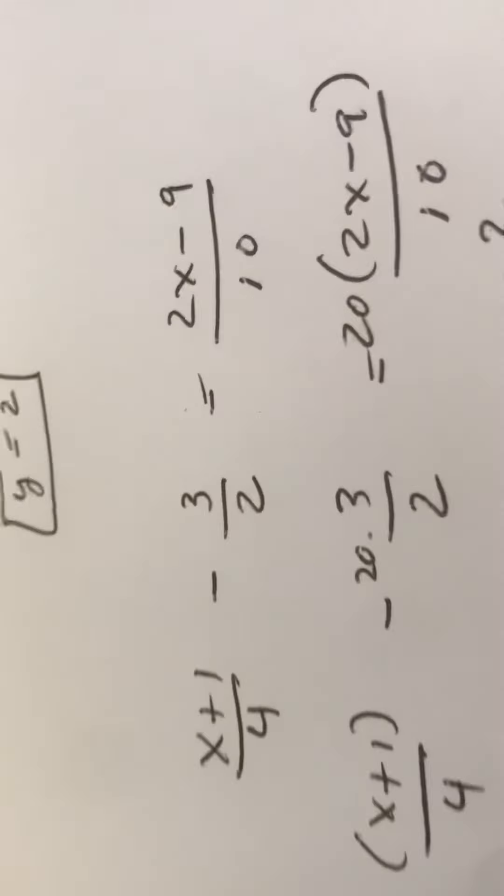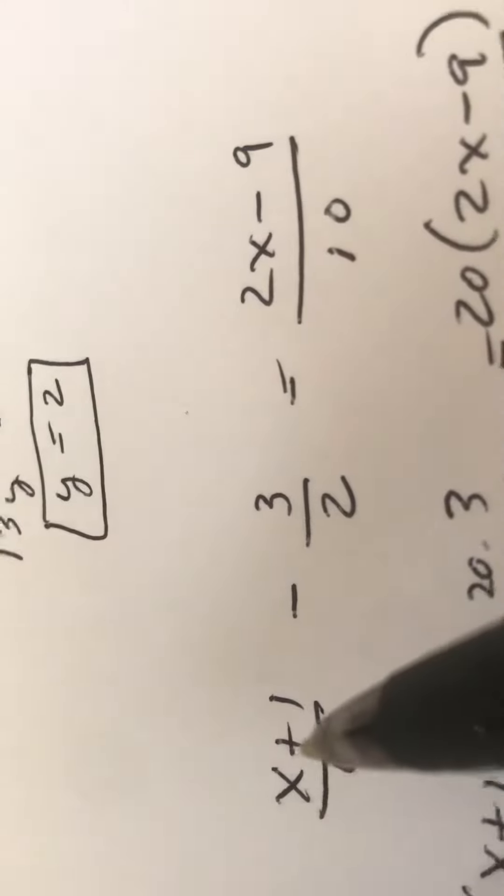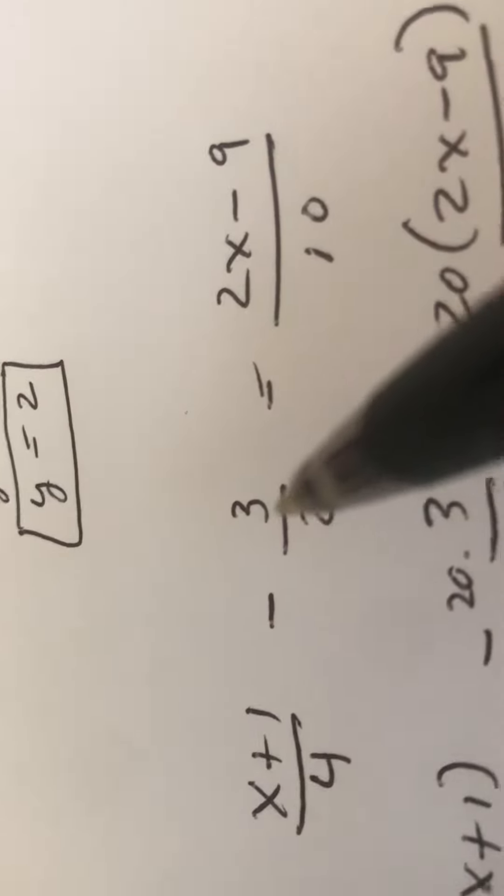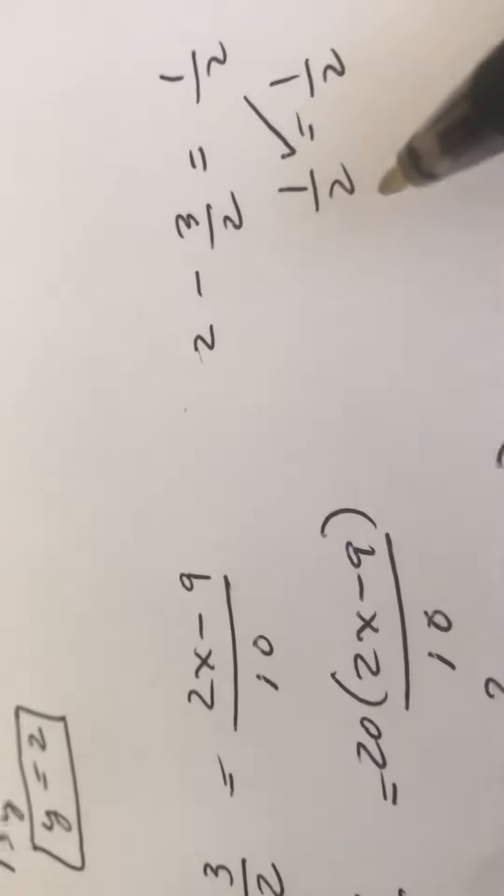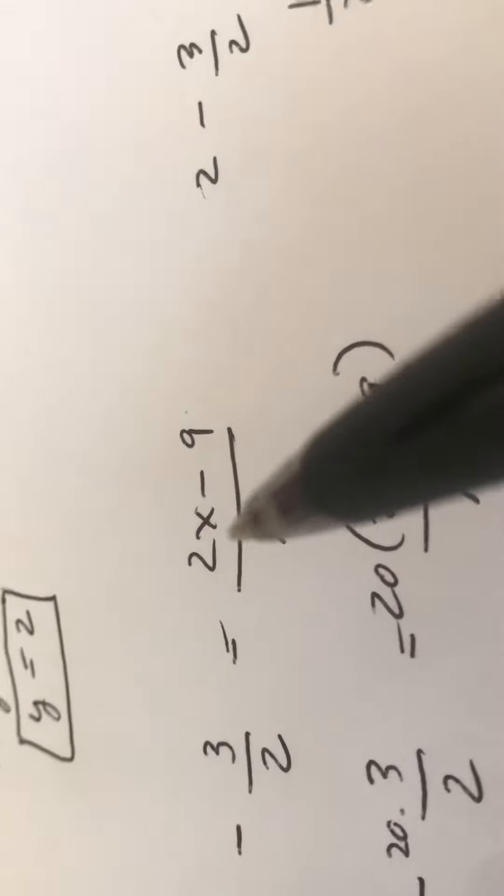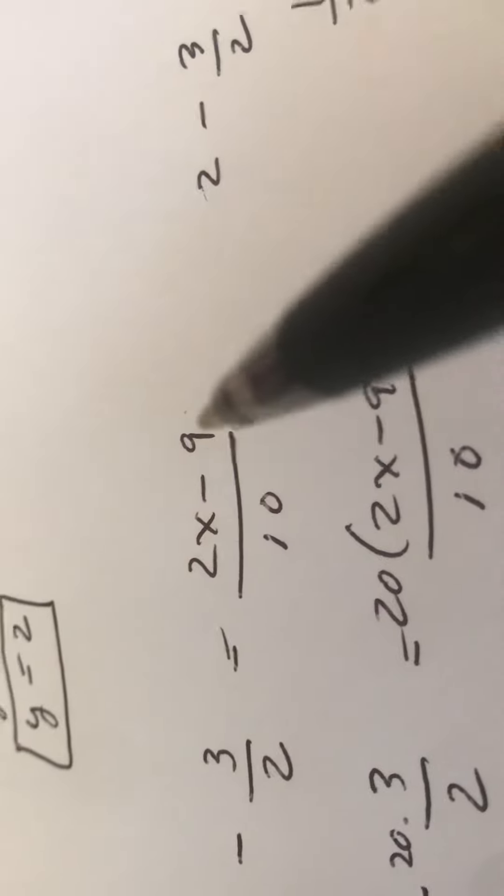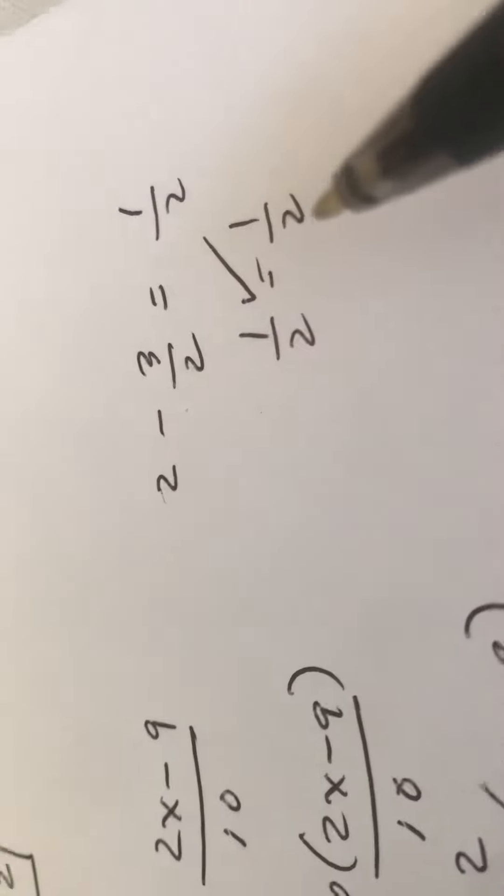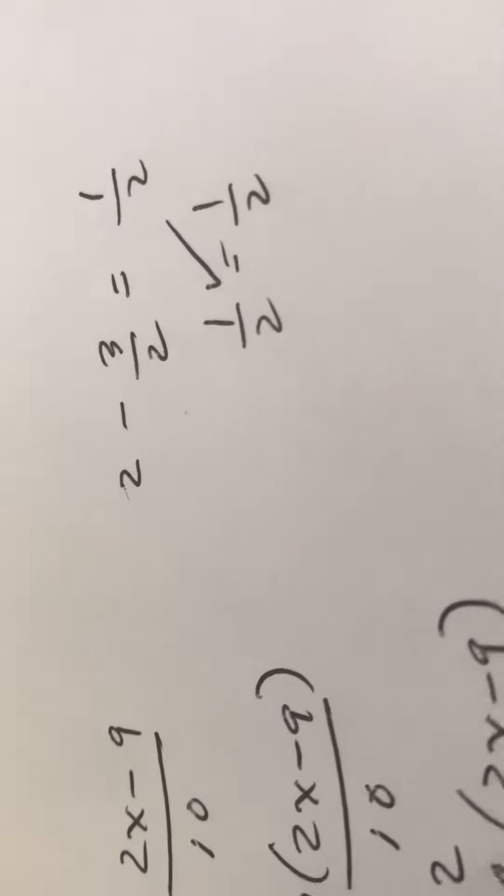Once again, you can plug it back into the original. You'll see that you get 2 minus 3 halves, which is 1 half. And then when you plug in 7 here, you get 14 minus 9 is 5 over 10. You get 1 half, so your answer works.